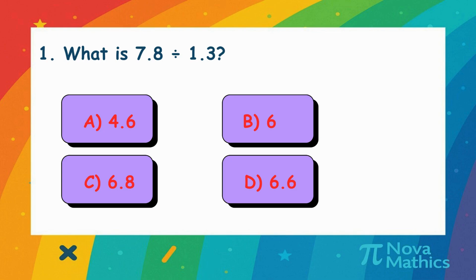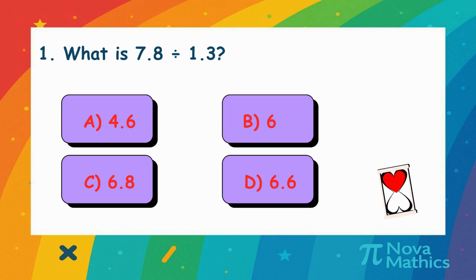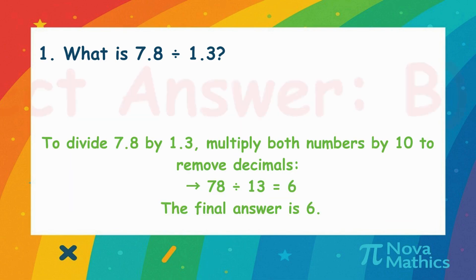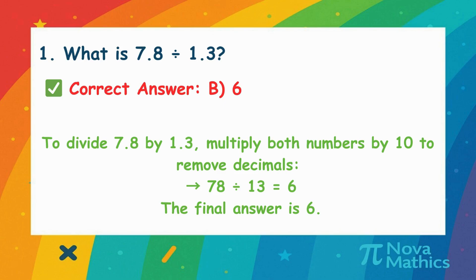1. What is 7.8 divided by 1.3? We want to divide 7.8 by 1.3. Multiply both by 10 to make them whole numbers. 78 divided by 13 equals 6.